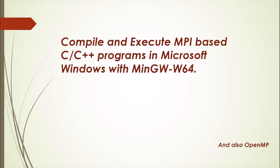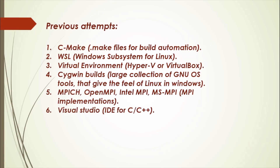Hey everyone, welcome back. In this video I am going to show you how to compile and execute OpenMP and MPI-based C and C++ programs in Microsoft Windows with the help of MinGW-W64 compiler. These are some of the ways present on the internet to compile and execute MPI programs: using CMake, WSL (Windows Subsystem for Linux), virtual environments including Hyper-V or VirtualBox, Cygwin, and MPI implementations like MPICH, OpenMPI, IntelMPI, and MSMPI, as well as Visual Studio.